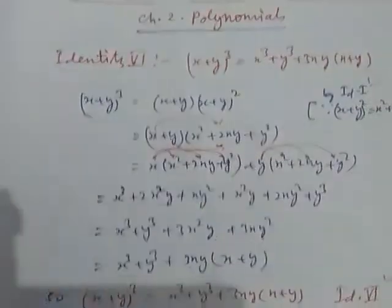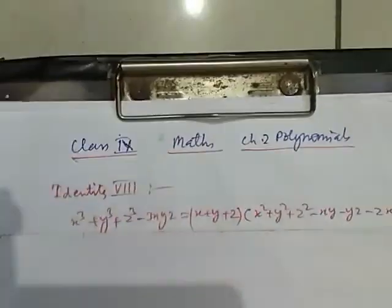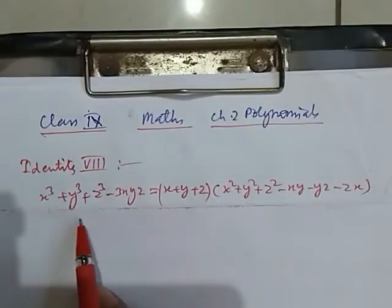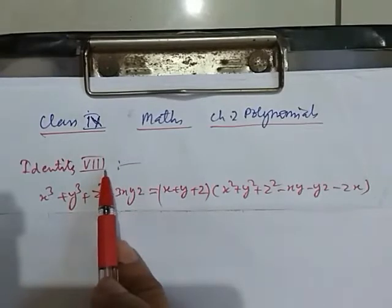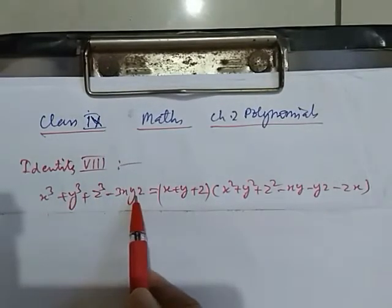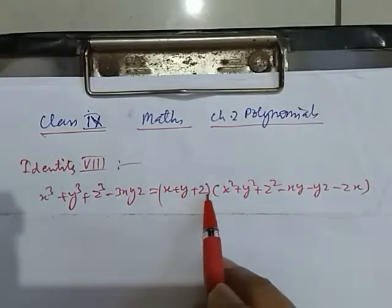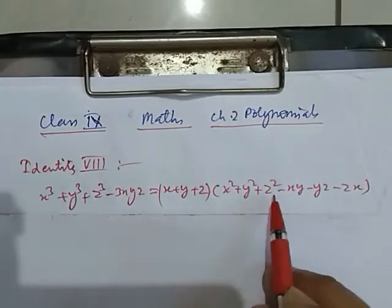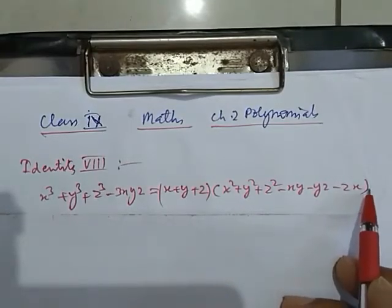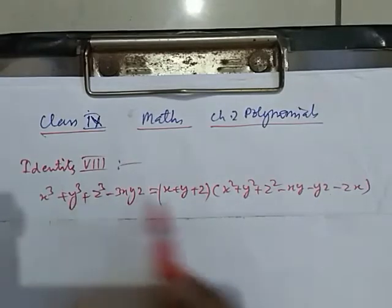Now we take other identity. This is our next identity — identity 8: x cubed plus y cubed plus z cubed minus 3xyz, can be written as x plus y plus z into x squared plus y squared plus z squared minus xy minus yz minus zx. So, first we check how we can write this equal to this.